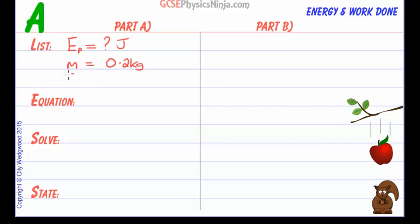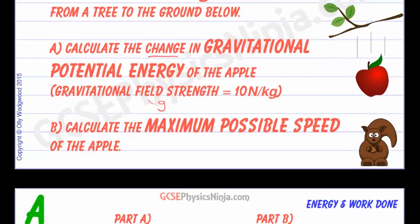We know that the gravitational field strength is 10 newtons per kilogram, and we know that the height it falls is 4 meters.